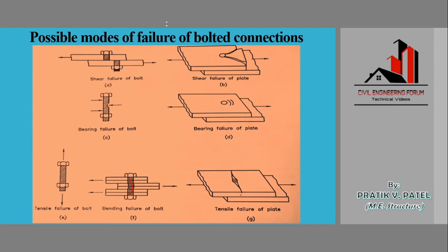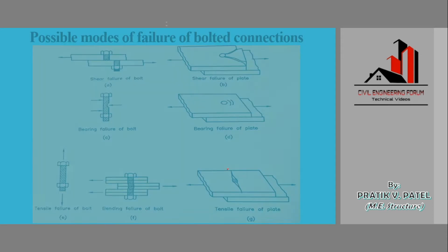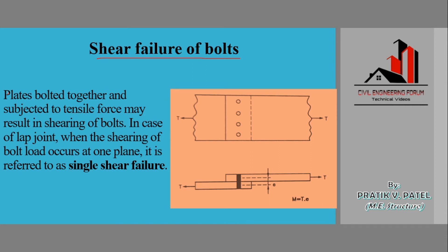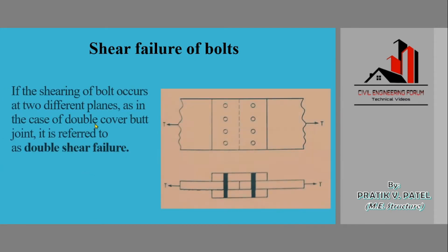Now we'll understand shear failure of bolt in detail. When two plates are bolted together and subjected to tensile force, the bolt may fail in shear. When the load occurs on one plane, it is referred to as single shear failure. This is only possible in the case of a lap joint, where the eccentricity of the forces causes the bolt to fail in shear on a single plane.